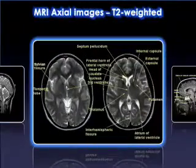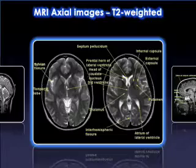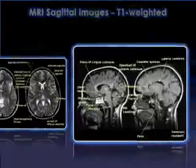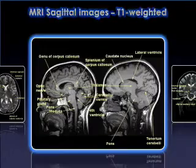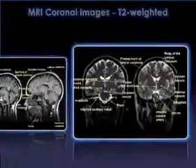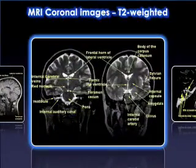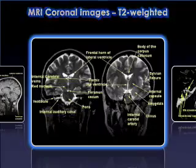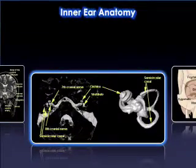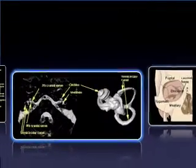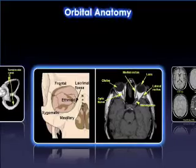The module does an extensive review of normal anatomy seen on MRI, demonstrating T2-weighted and T1-weighted axial and sagittal images, and high-resolution T2-weighted coronal images. This course also reviews the cranial bones, facial bones, inner ear, orbits, and sinuses.